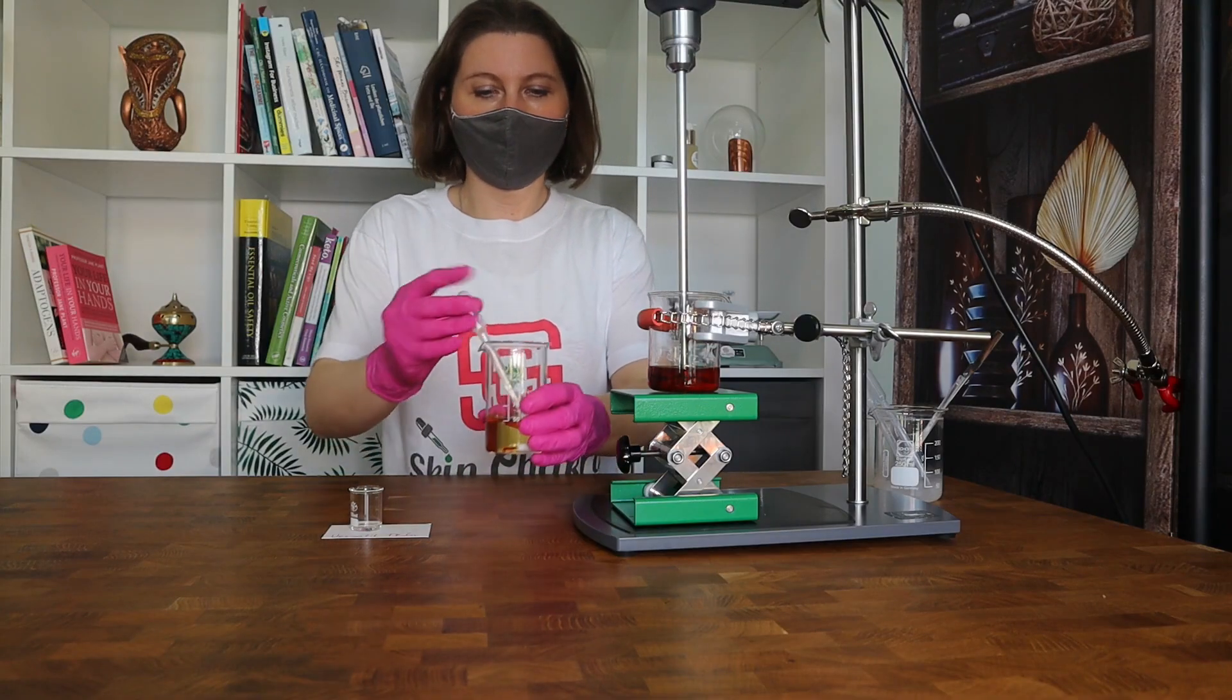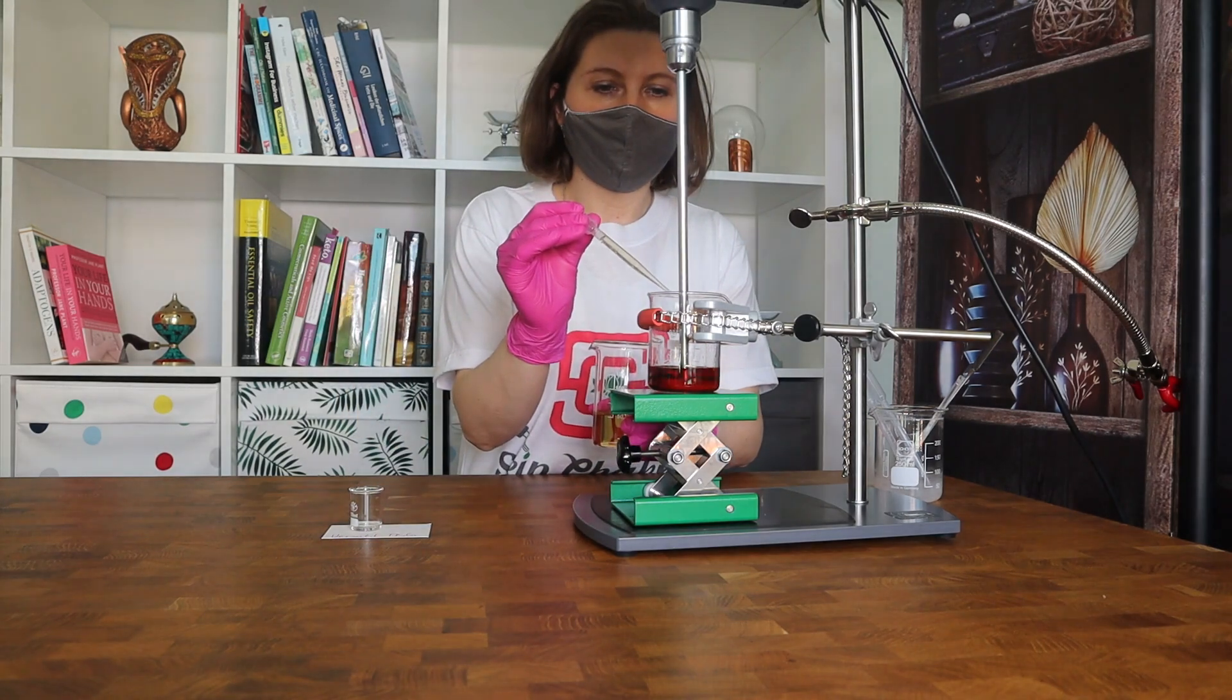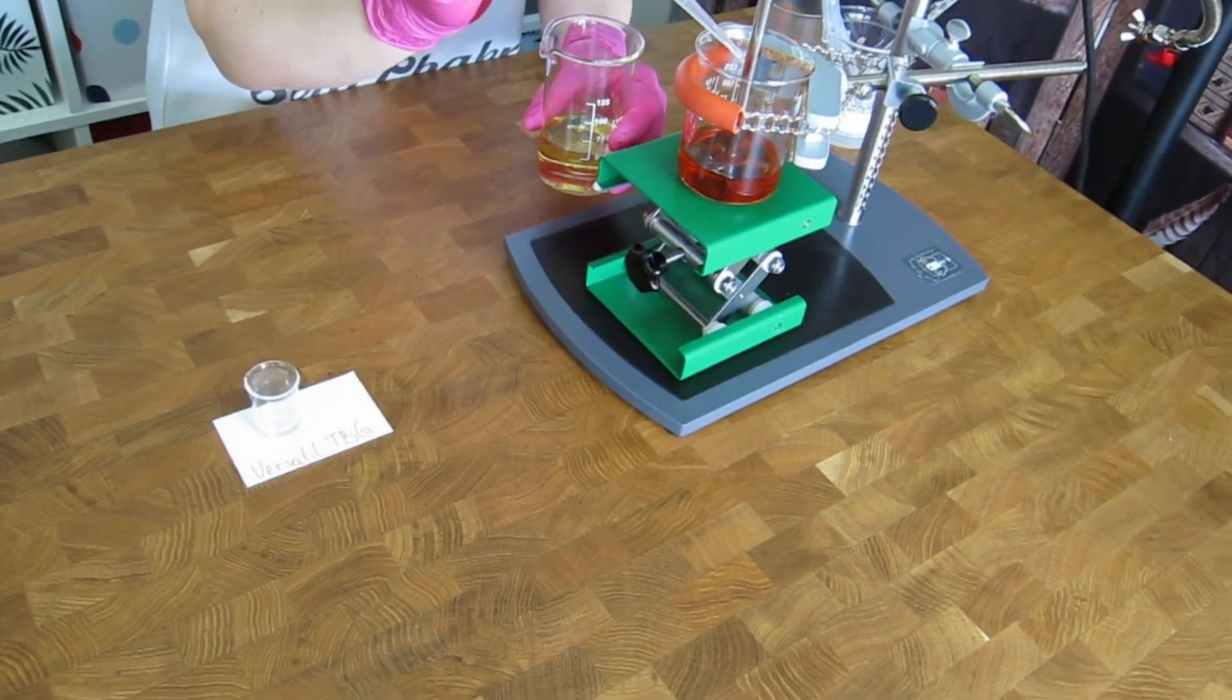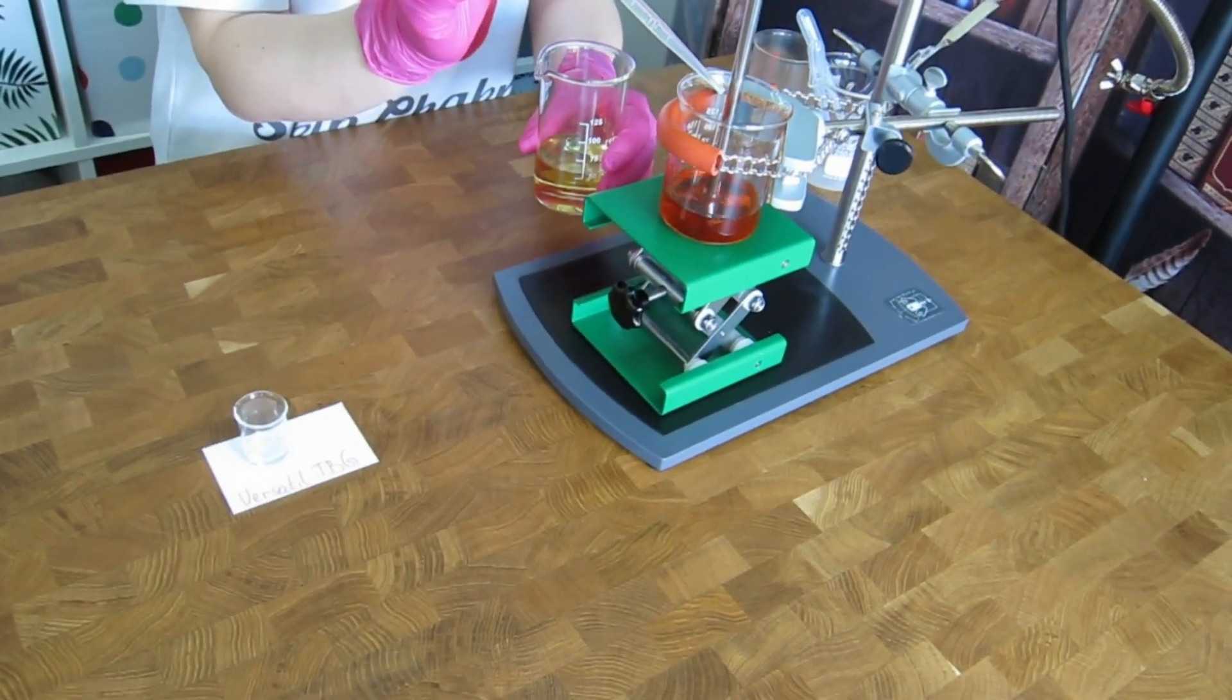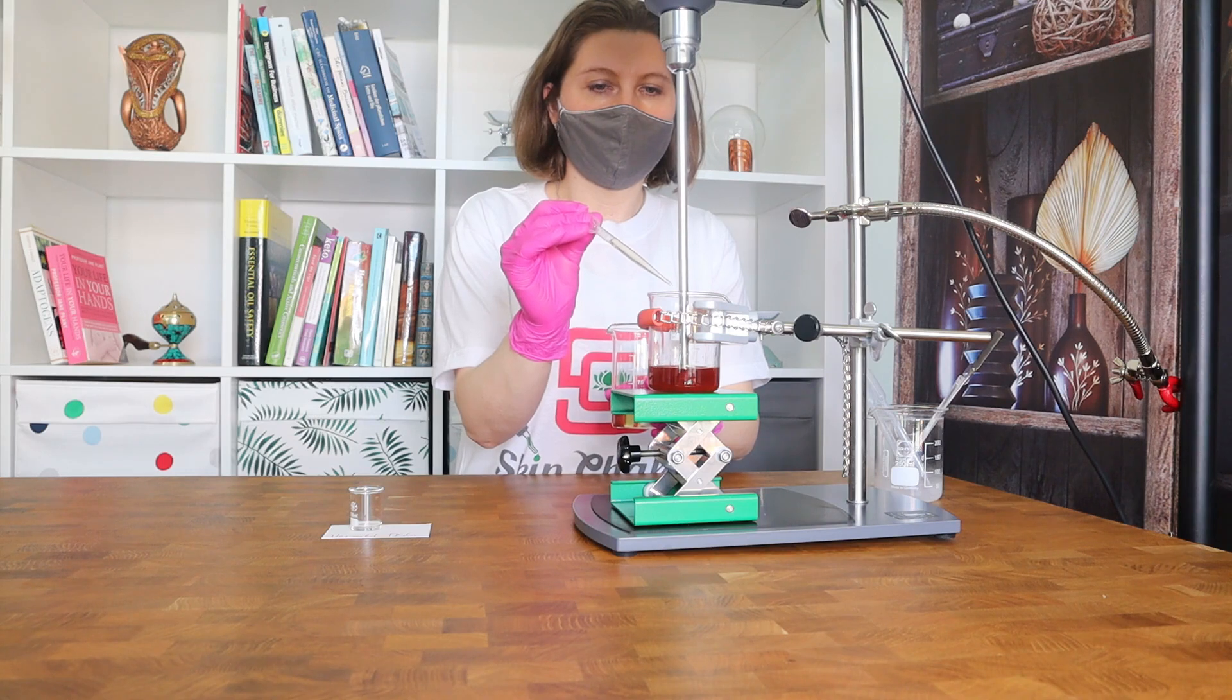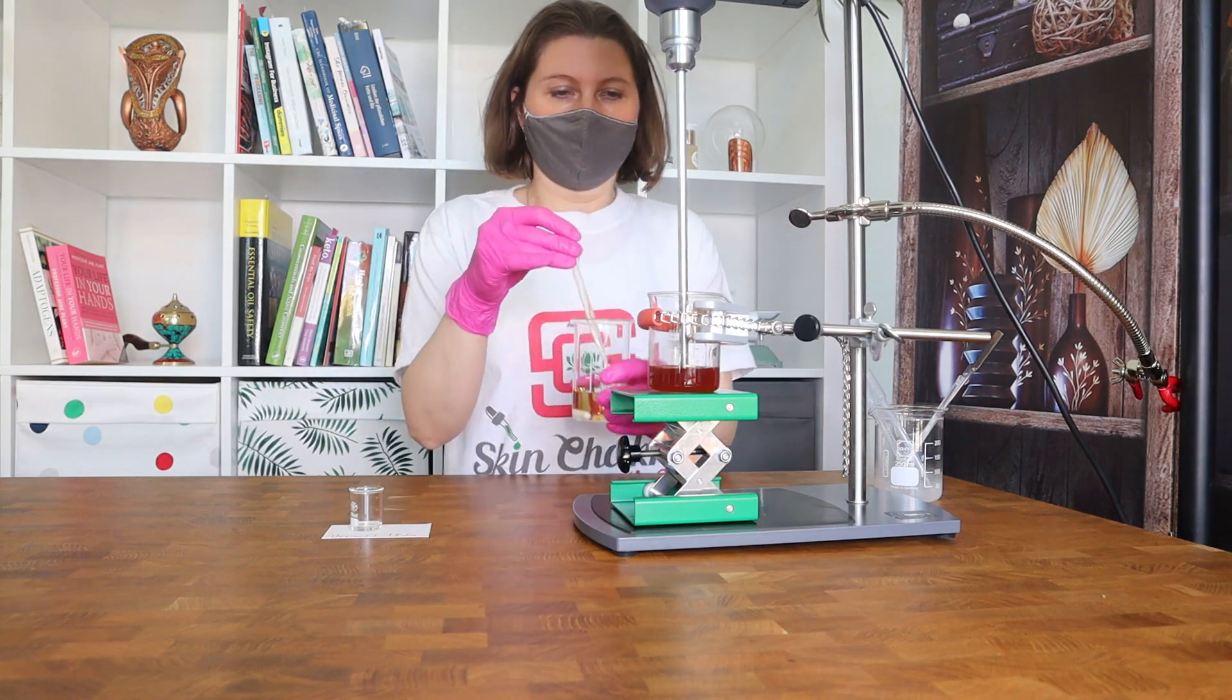The oil phase is completely uniform now. The water phase is finished and the pH is adjusted. Now the magic starts and Svetlana adds the water phase gradually and slowly to the oil phase. This is crucial for the stability of the emulsion and for avoiding a phase inversion.